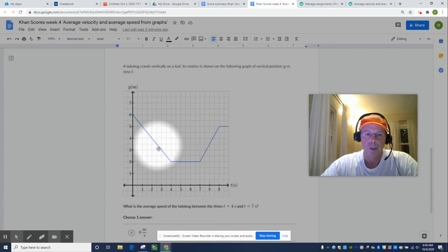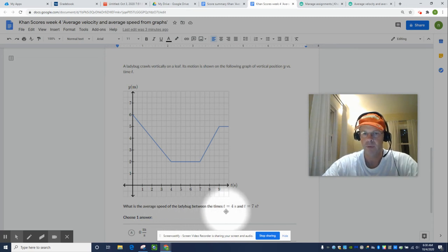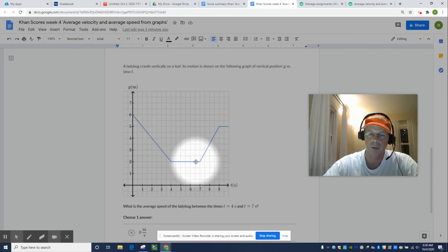We can interpret all the regions here, but they're actually asking us for the average speed of the ladybug between the times t equals four seconds and t equals seven seconds. Khan will slice up this graph into zero to four seconds, four to seven, seven to nine, nine to ten, or whatever. Khan will slice up this graph into all sorts of different intervals.